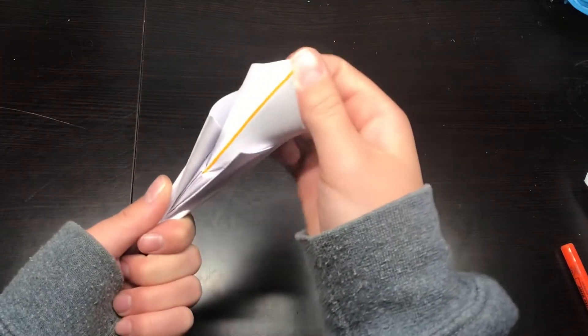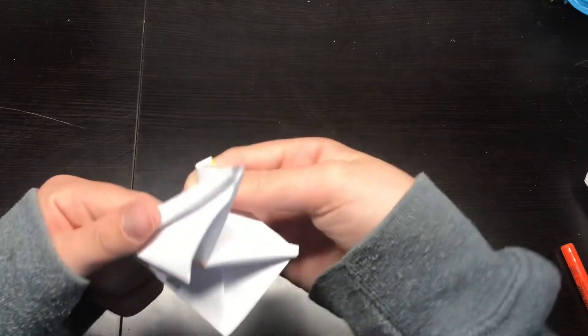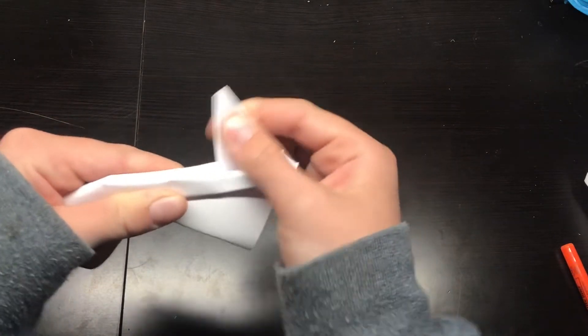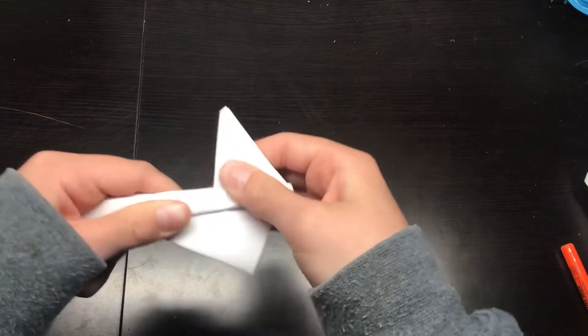Once you have this shape, see these two flaps? Lift those up to make the tail, the stabilizer.